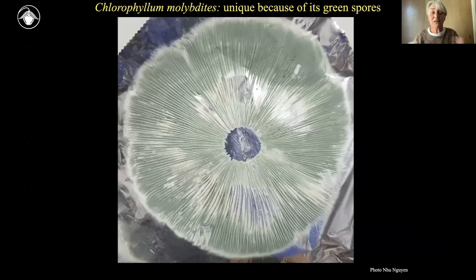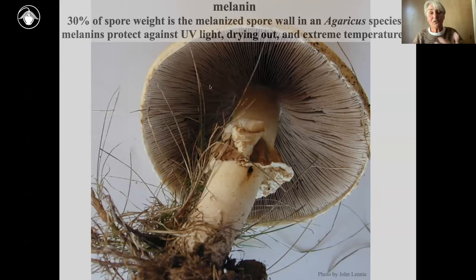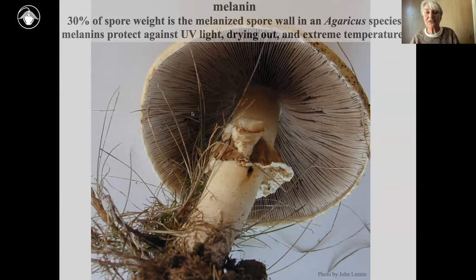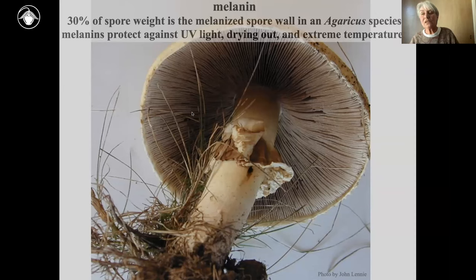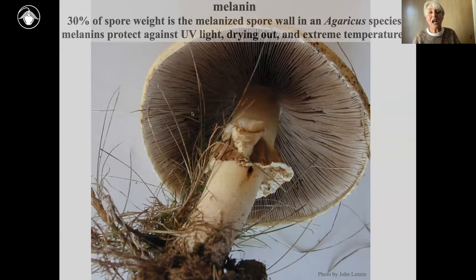What is the advantage of having coloured spores? A coloured spore wall really helps in many circumstances. In Agaricus species — your button mushroom relatives — the amount of melanin is amazing: 30% of the spore weight is this melanized spore wall. The fungus has invested heavily in melanin to protect its offspring. Melanin protects against UV light, against drying out, and against extreme temperatures both high and low. Experiments with mutants lacking a coloured spore wall show they don't survive exposure to sunlight. Melanin is expensive to make, but if you have it, you'd better keep it.